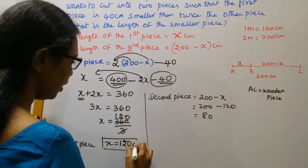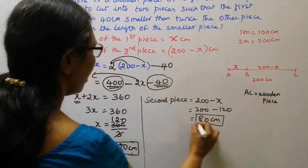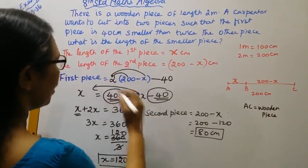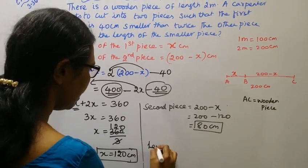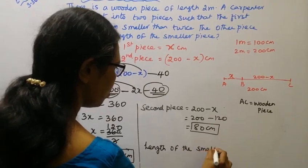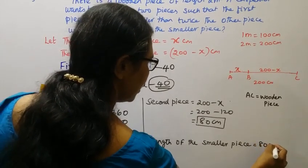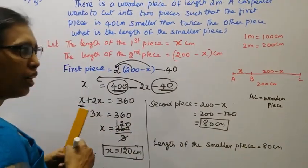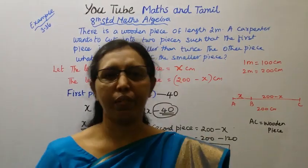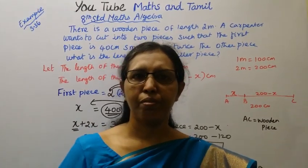The first piece is 120 cm and the second piece is 80 cm. The length of the smaller piece is equal to 80 cm. This channel helps you to get 100 marks. Thank you.